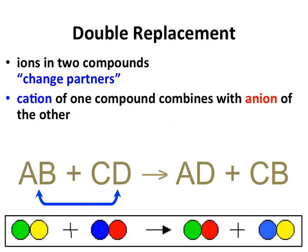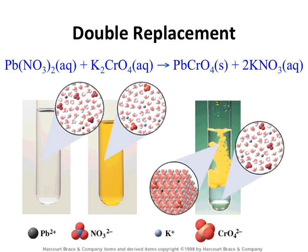Double replacement is related to single replacement in that there is a swapping of ions. When we have two different compounds, the cation from one compound is going to swap and become partners with the anion of the other compound, and vice versa. So you start with two compounds and end with two compounds. For a double replacement reaction, you need to start with two compounds that are soluble in water — they must be aqueous solutions. Looking at lead nitrate and potassium chromate, notice there are no solids; everything is in its ion form, floating freely.